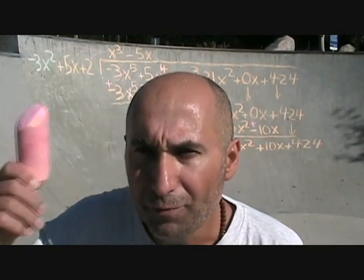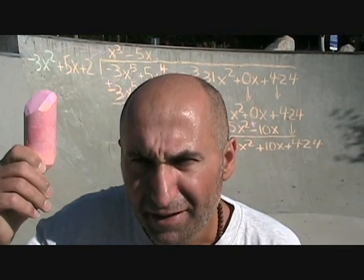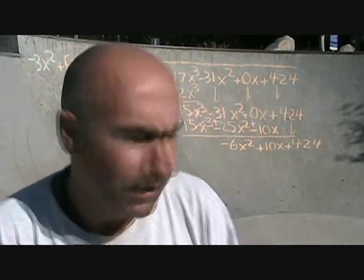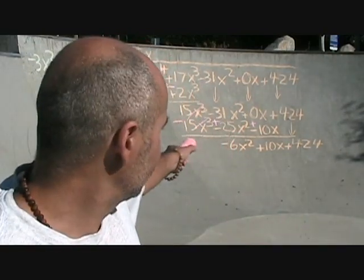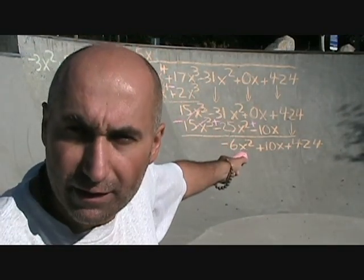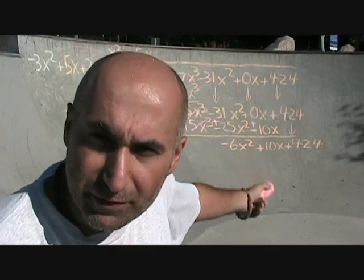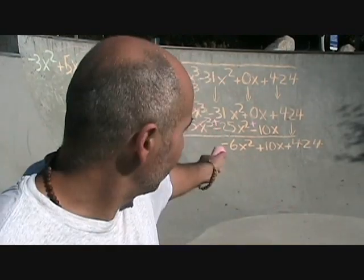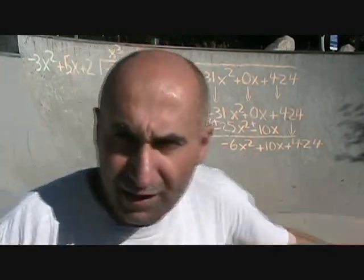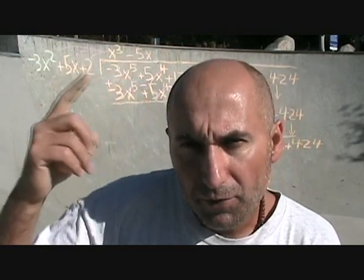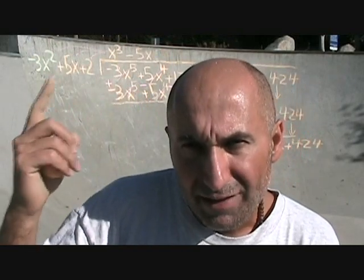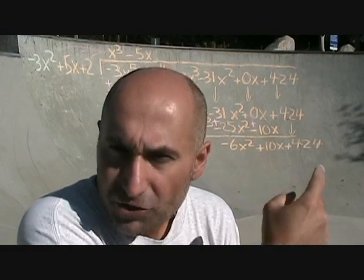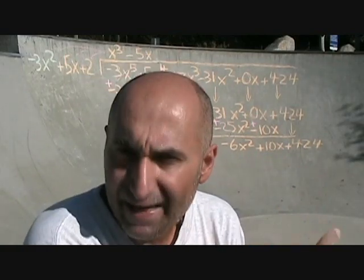Again, going back to the beginning: what are we going to multiply negative 3x² by to give us negative 6x²? That's just going to be 2. 2 times negative 3x² is negative 6x². We put the 2 up top and multiply out, then change all the signs and add them all together.